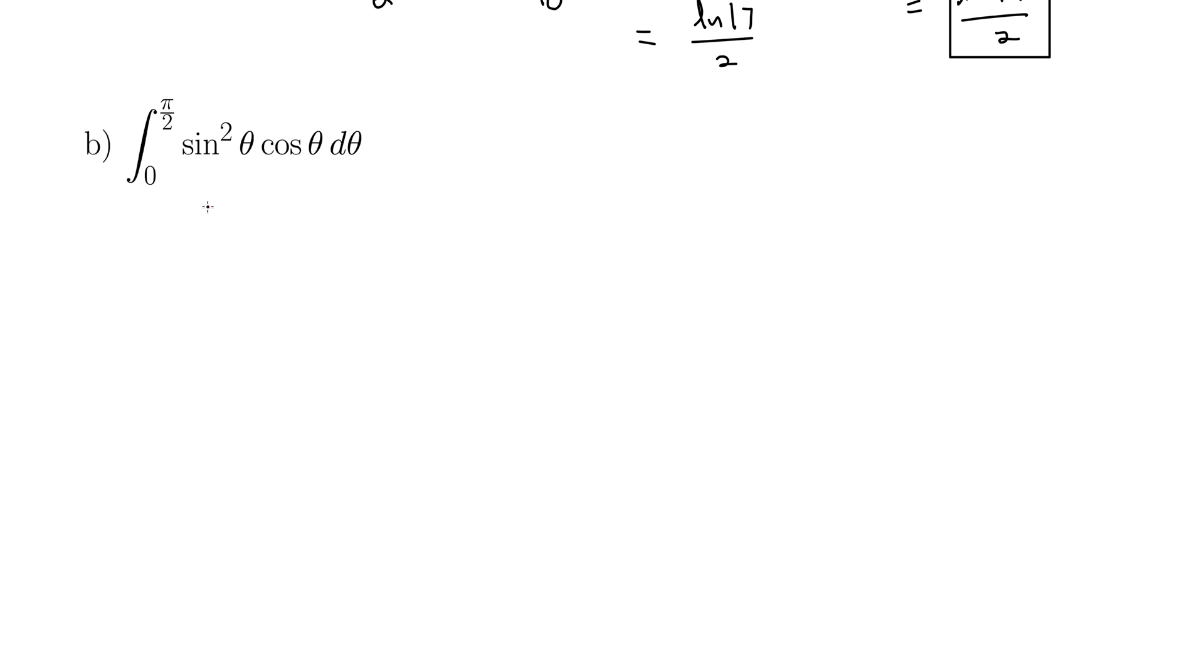How about we let u be sine theta? We're usually looking for a function inside another function, so the squared will be essentially the outside function and then sine theta can be our inside function. Well, then we have du equals cos theta d theta, which we can then solve for d theta. Or, of course, you can just plug in right here. Some people do that. That works fine too. Right there you can see that it's du. But we'll keep solving for d theta. d theta then is du over cos theta.